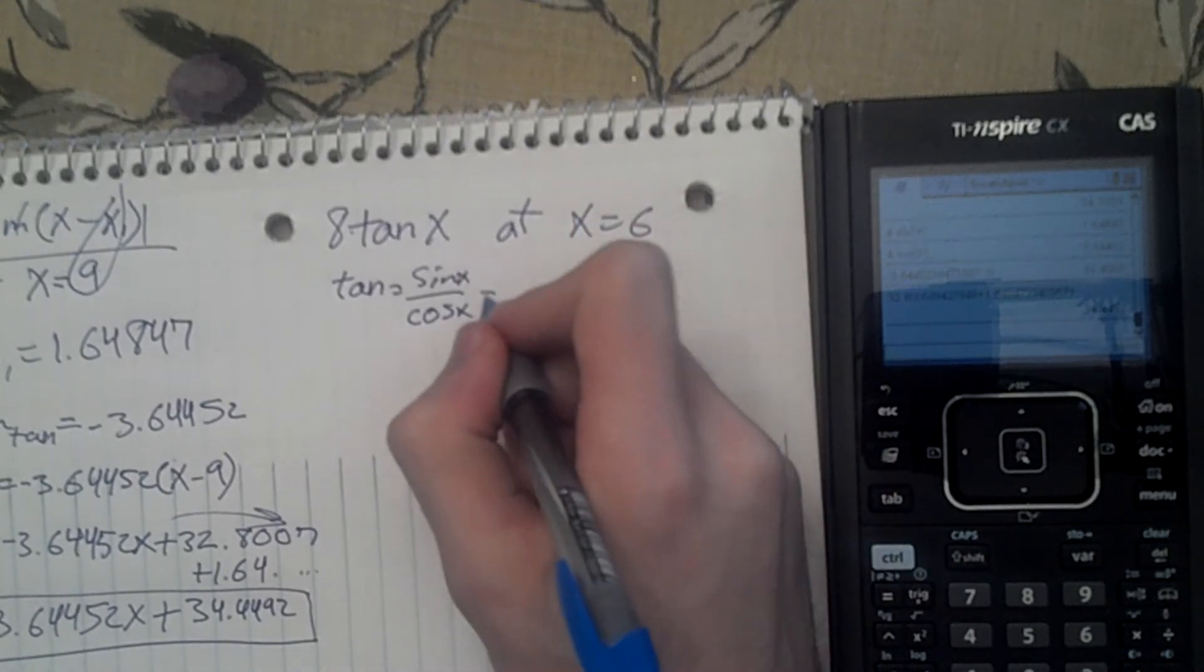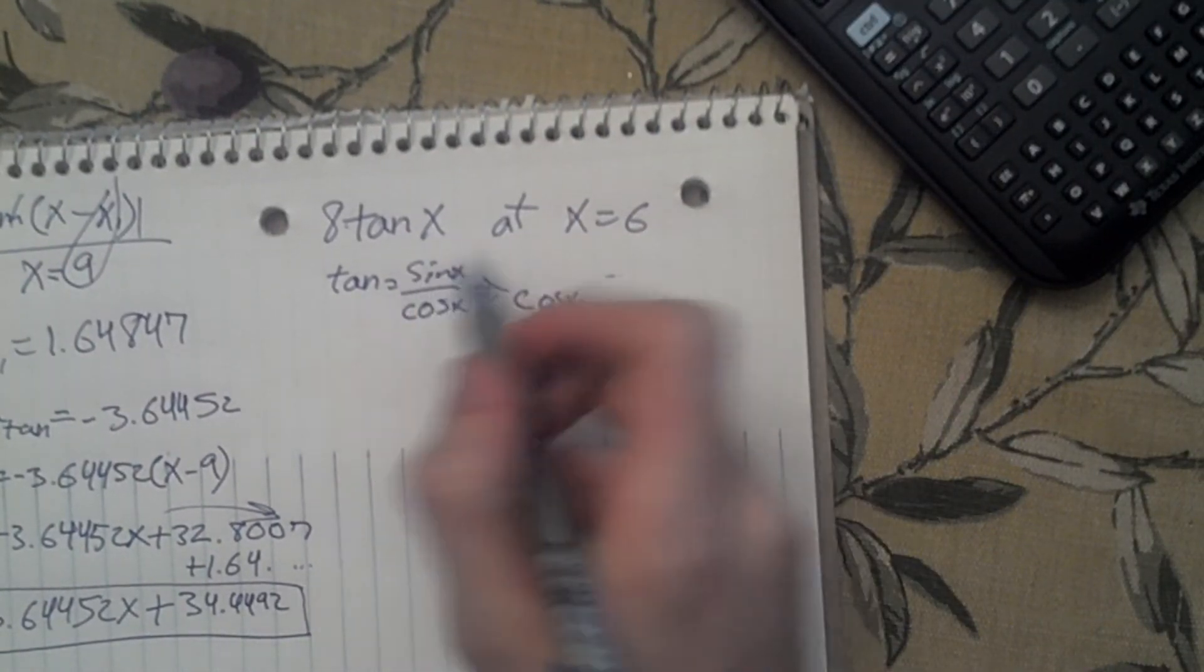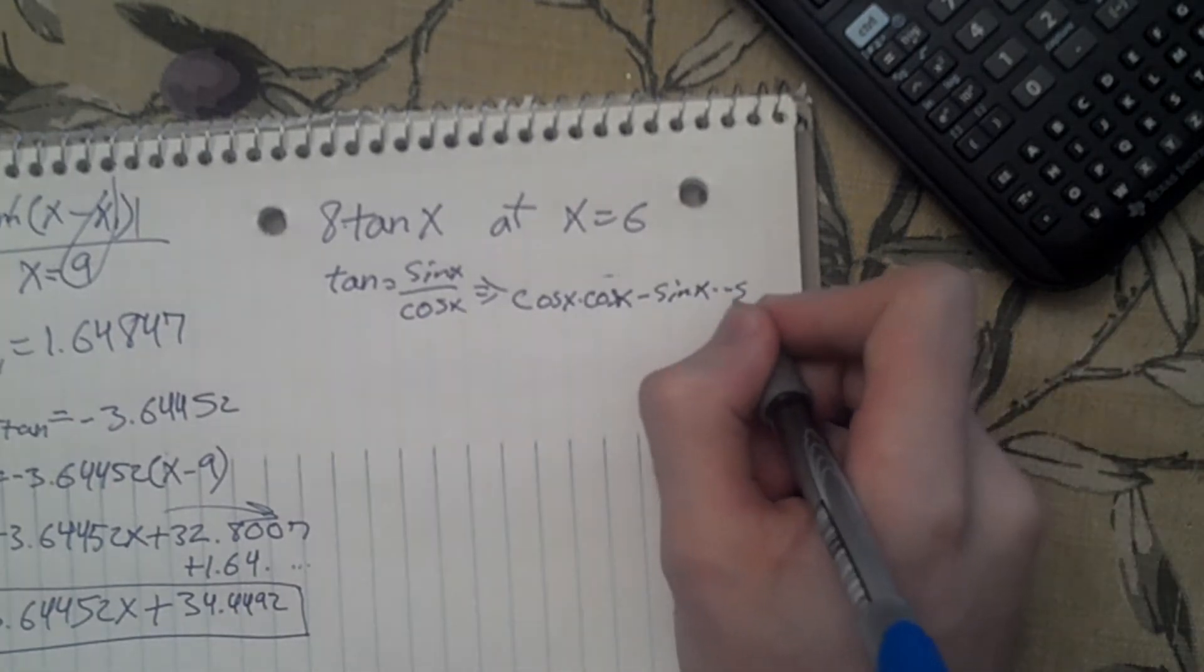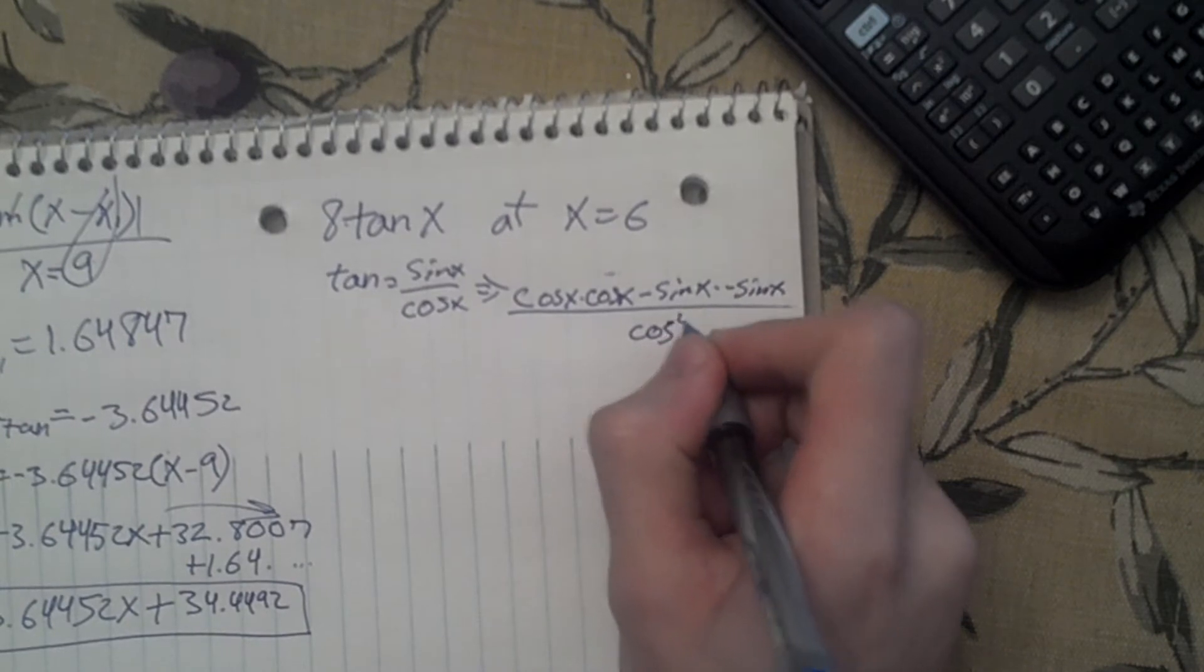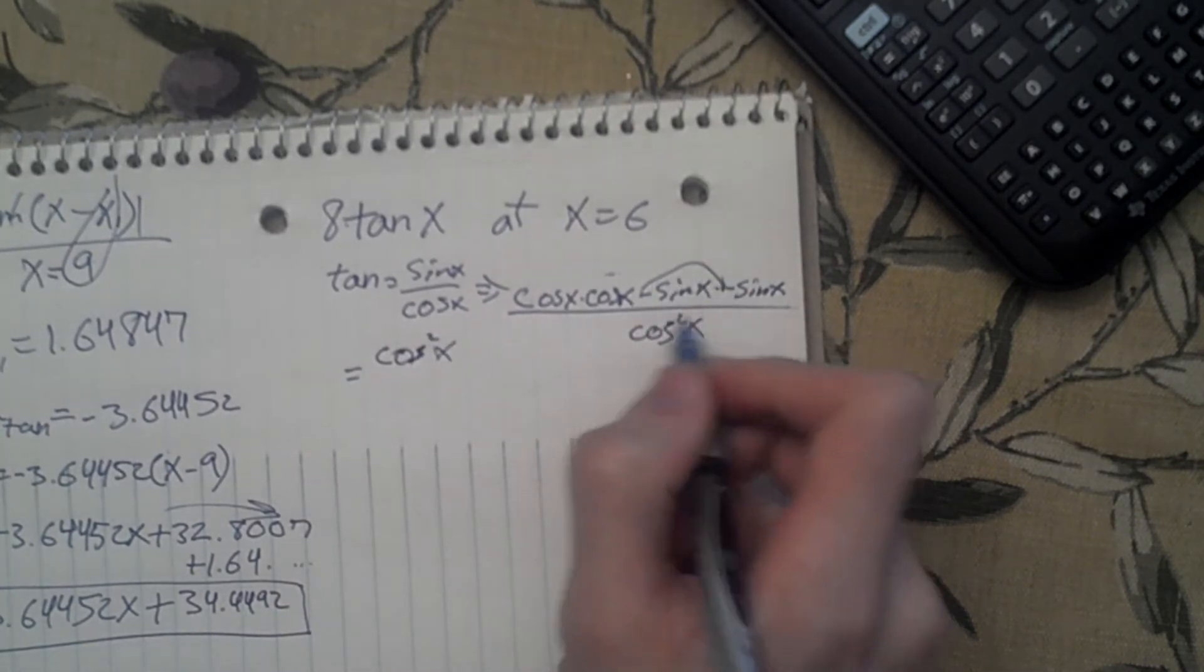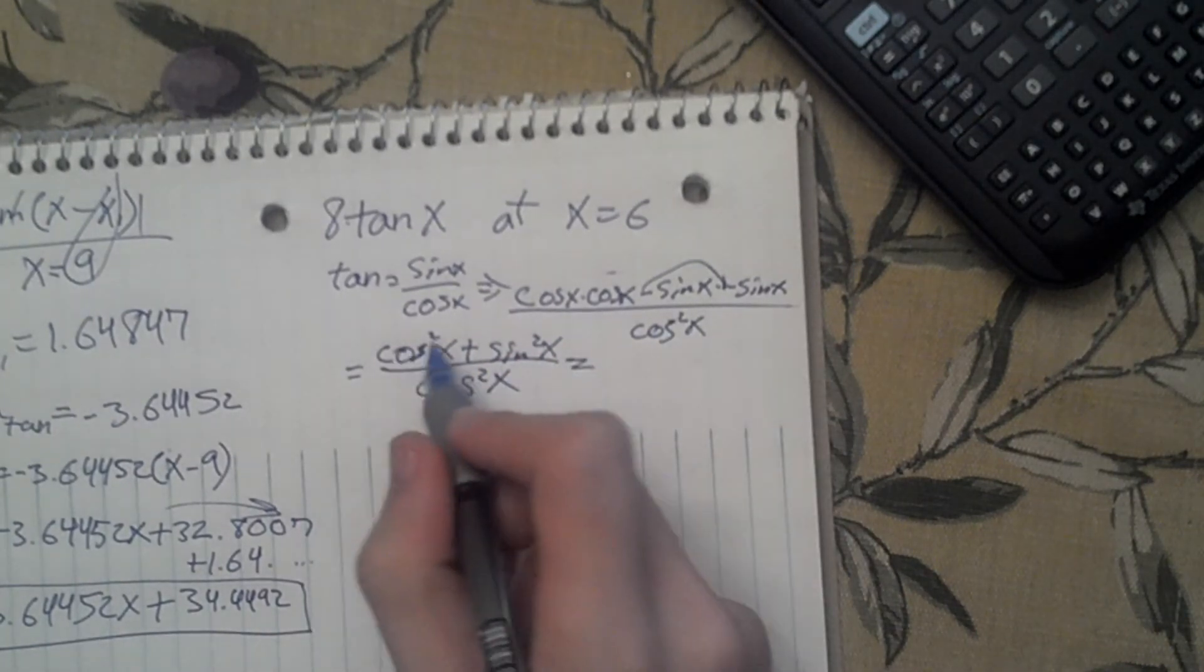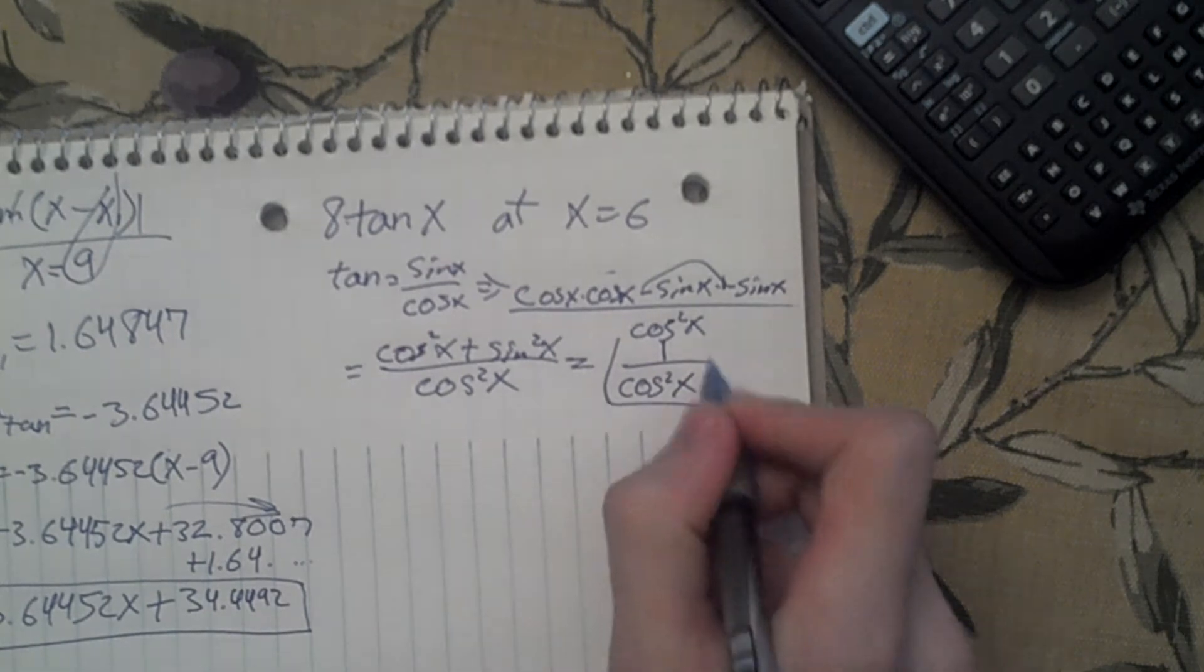If I find the derivative, we do cosine x times the derivative of sine x, which is cosine x, minus sine x times the derivative of cosine x, which is negative sine x, all over that bottom one squared. Let's clean this up. It's going to be cosine squared x plus sine squared x over cosine squared x. And cosine squared x plus sine squared x just equals 1 over cosine squared x. That's our derivative.